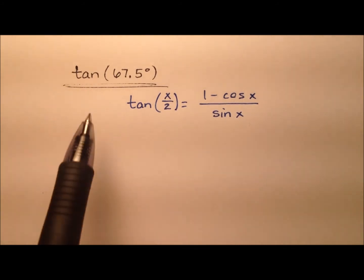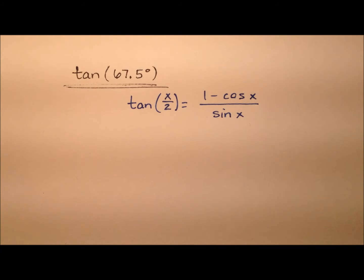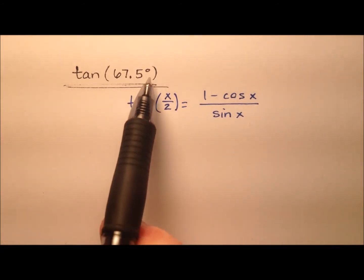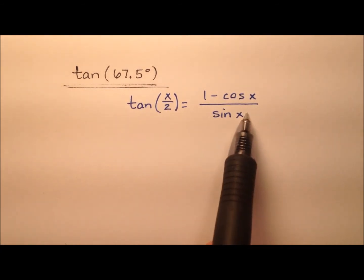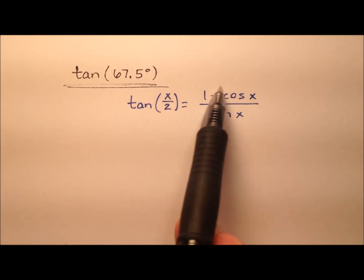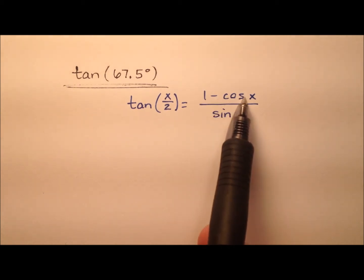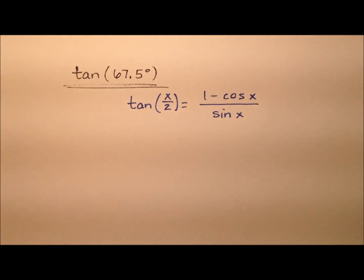In this example, we're going to work through and find the exact value for the tangent of 67.5 degrees. We're going to do so by employing this half-angle identity for tangent. There are a few choices here for this half-angle identity, and I went ahead and went with 1 minus cosine x divided by sine x.